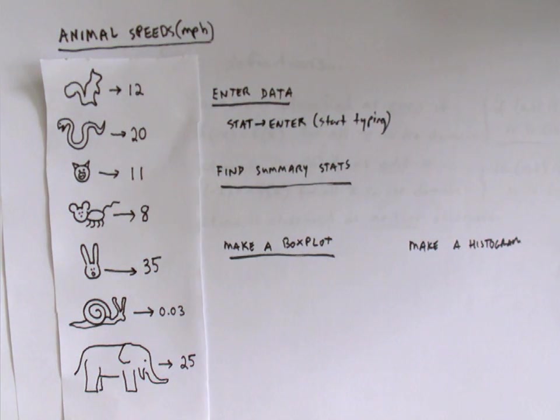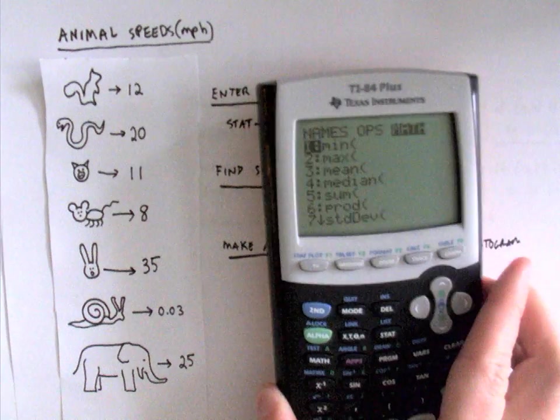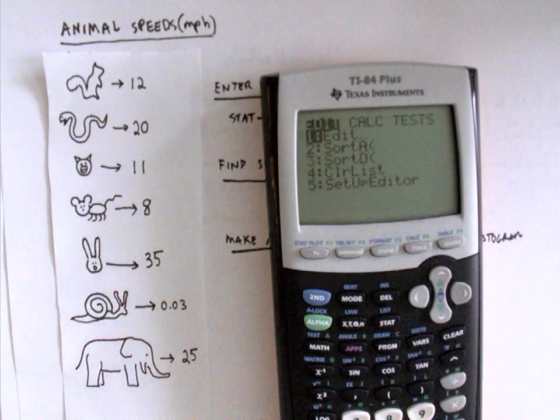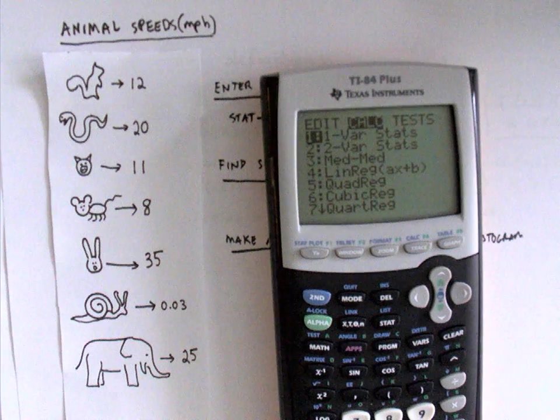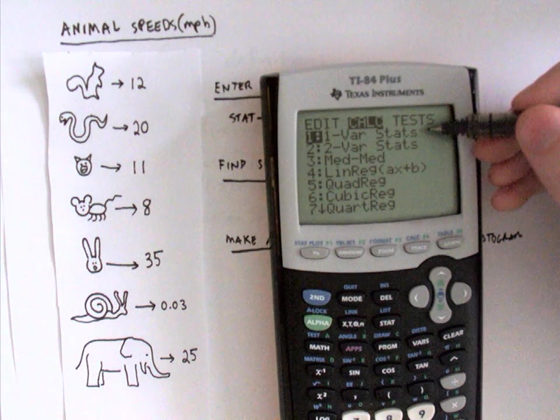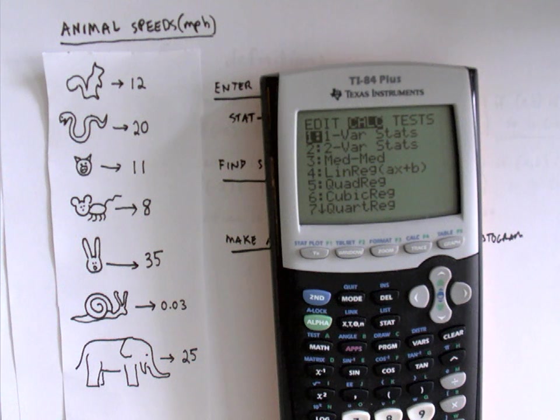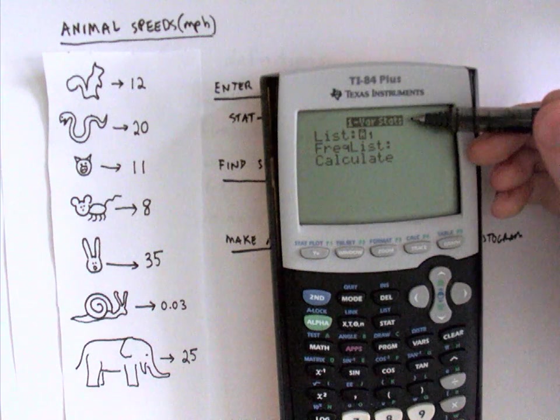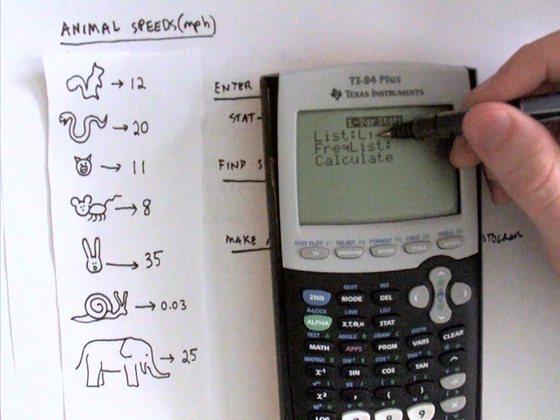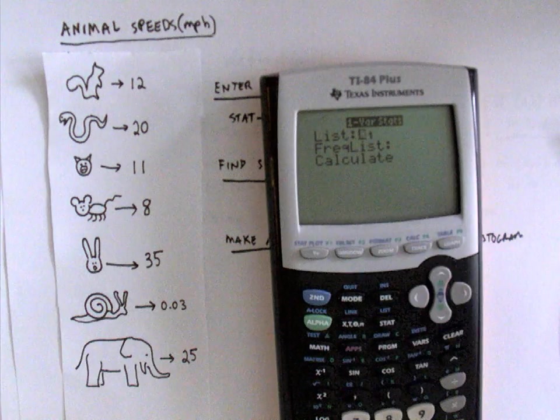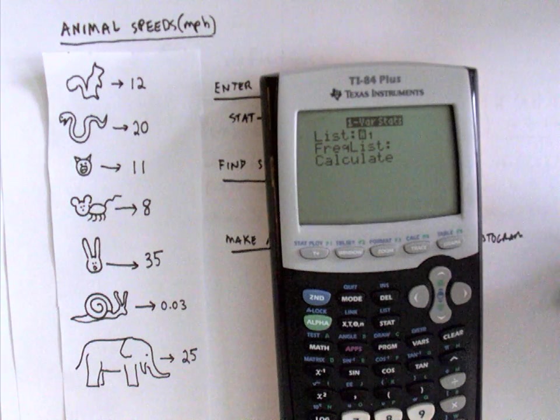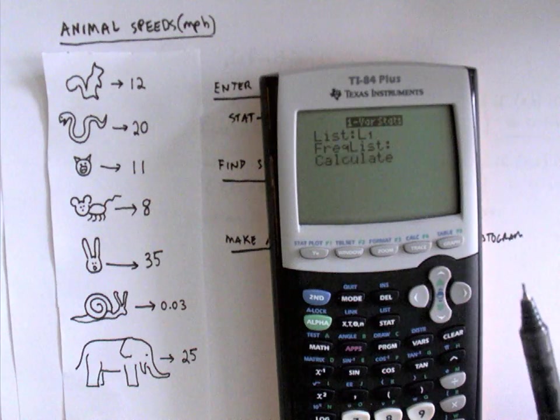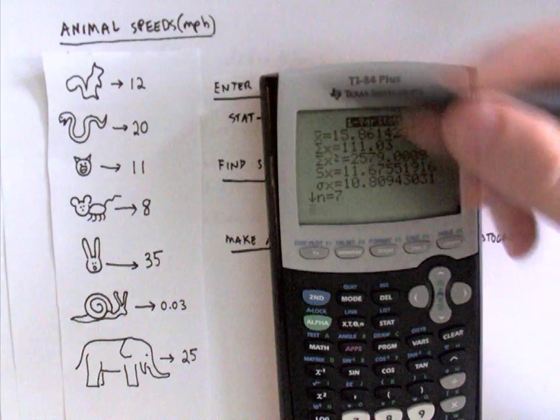The next thing I'll show you how to do is find some summary statistics if you want to know the average animal speed but you don't feel like adding up all that data. You could do it from the list menu here but there's a shortcut. Hit second quit. I'm going to start by pressing the stat key again. Instead of hitting enter on edit I'm going to move over once to the calc menu and I see this option of one variable stats. This gives you summary statistics, basically all the statistics you're going to need at the beginning of the course for this data set. So I hit enter for one var stats. If you have an older version of the calculator you won't see this screen. You'll just see the word one var stats. And then what we need to do is we need to reference the list that we want to find the statistics for. Of course it's L1 unless we wanted to do the one in feet per second. Frequency list can be left blank because we only have one squirrel and one snake and so forth. Just go down and hit calculate. You see what it tells you. It tells you the average speed. That's what we get if we add them all up and divide it by 7. It tells us the sum.